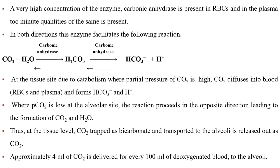A very high concentration of the enzyme carbonic anhydrase is present in RBCs, with only minute quantities present in the plasma. This enzyme facilitates the reaction in both directions. At the tissue side, due to catabolism where partial pressure of carbon dioxide is high, CO₂ diffuses into blood and forms HCO₃⁻ and hydrogen ions. At the alveolar side, where PCO₂ is low, the reaction proceeds in the opposite direction, leading to the formation of carbon dioxide and water. Thus, at the tissue level, carbon dioxide is trapped as bicarbonate and transported to the alveoli, where it is released out. Approximately 4 ml of carbon dioxide is delivered to the alveoli for every 100 ml of deoxygenated blood.